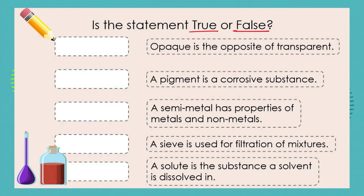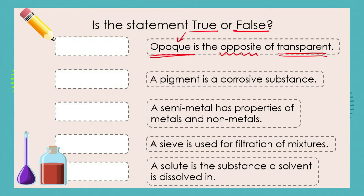Let's move on to our next challenge. I love true and false because all we have to do is read the statement and decide: yes, it's correct, or no, that's wrong. Statement: 'Opaque is the opposite of transparent.' Certain plastics, for example, are opaque — you can't see through them — but glass is usually transparent, you can see through it. So are they opposites of each other? Yes, this is true.